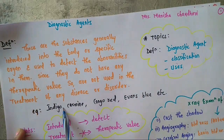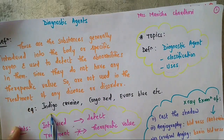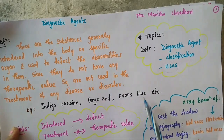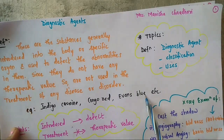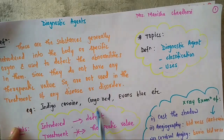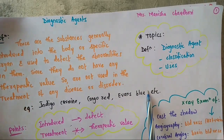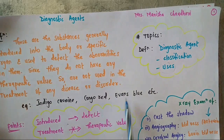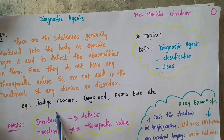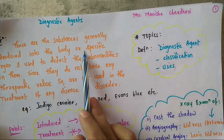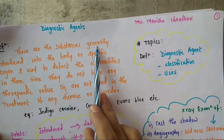What are the examples? Examples are indigo carmine, Congo red, and Evans blue. These are the examples of diagnostic agents.